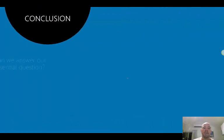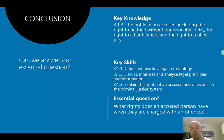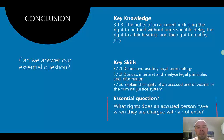As we finish off with our essential question — can you answer this? What rights does an accused person have when they are charged with an offence? The simplest answer is to identify the three rights: the right to trial without unreasonable delay, the right to a fair hearing, and the right to trial by jury. But I want you to go further — make it a paragraph and actually explain what these three things are. Don't take the shortcut; shortcuts don't get you anywhere. Make sure you do the work properly. If you want to leave a review, send me a message or go onto Facebook and write one.